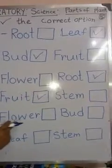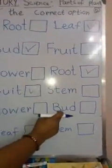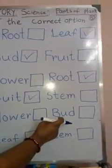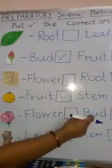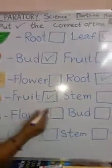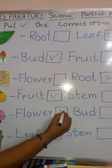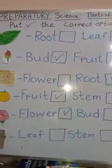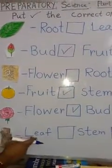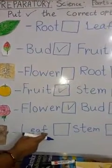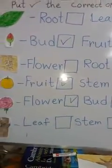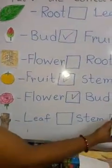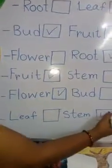F-l-o-w-e-r flower. First bud, thereafter flower comes. This picture is for flower, so put right here. Then l-e-a-f leaf, s-t-e-m stem. Yes, here is the picture of stem.